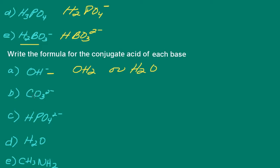The conjugate acid for carbonate — we add a proton to the carbonate ion and get hydrogen carbonate. The charge increased by one. For hydrogen phosphate, its conjugate acid would be dihydrogen phosphate. Again, adding a proton increases the charge by one.